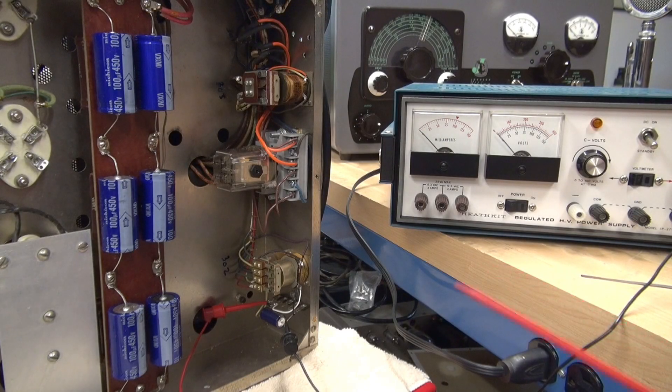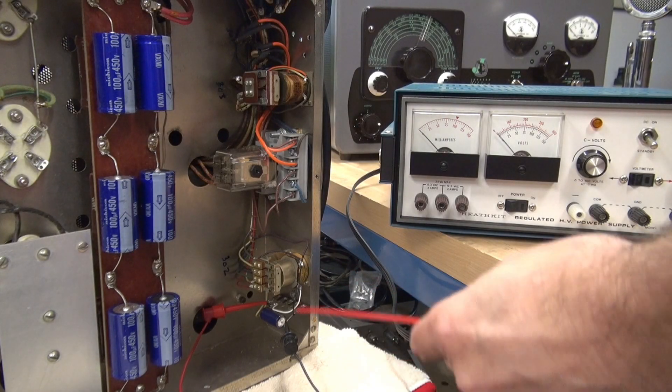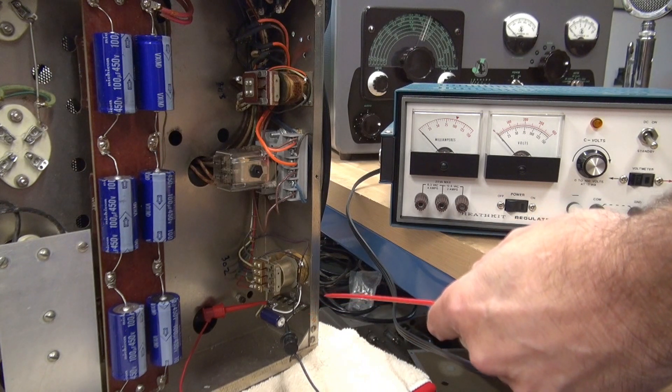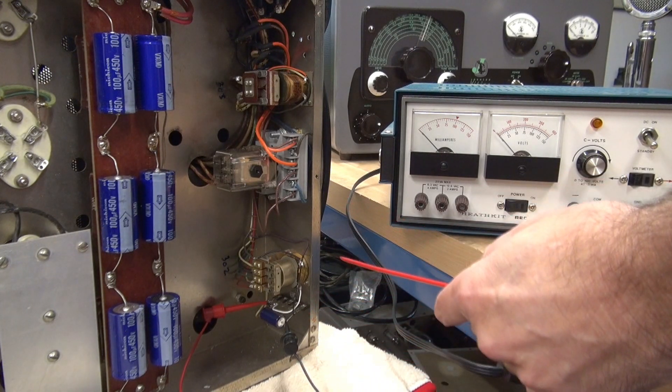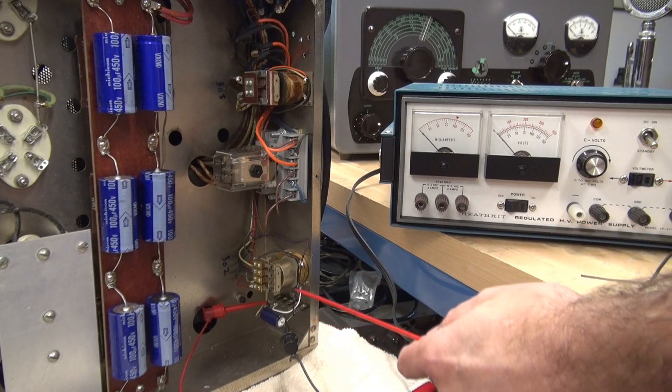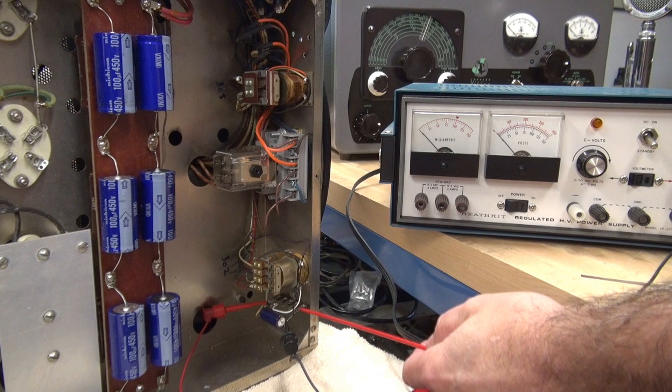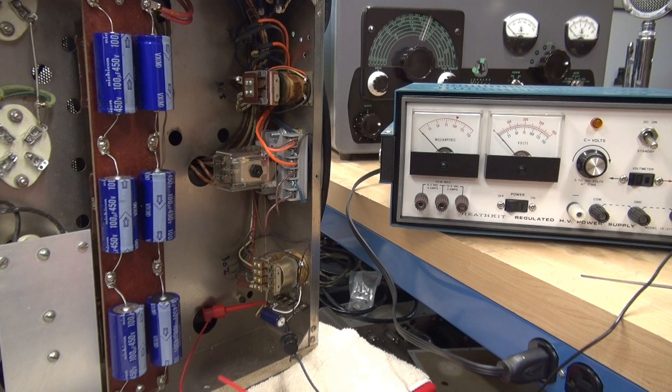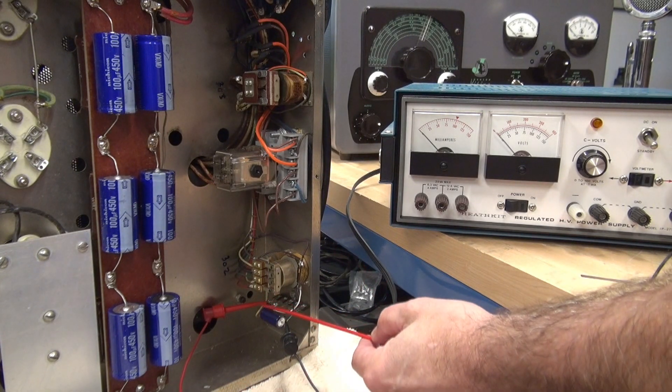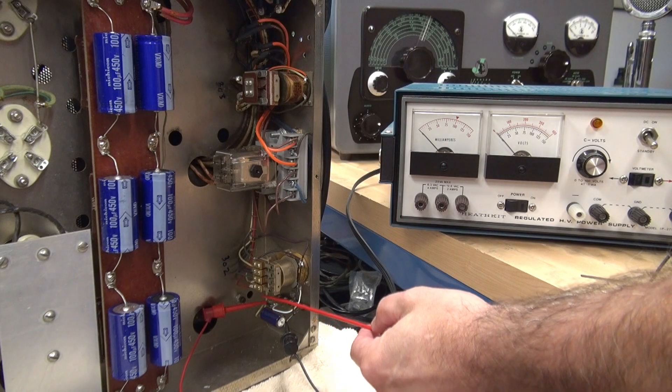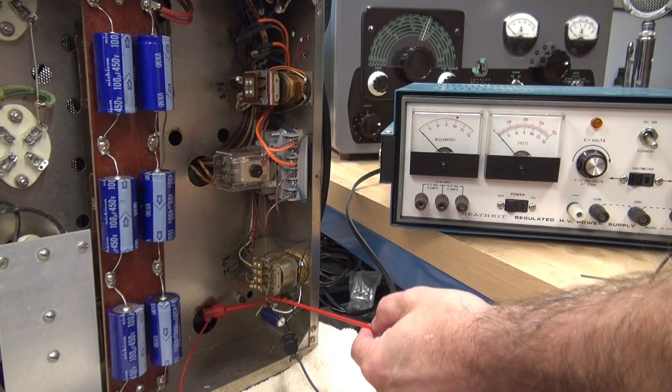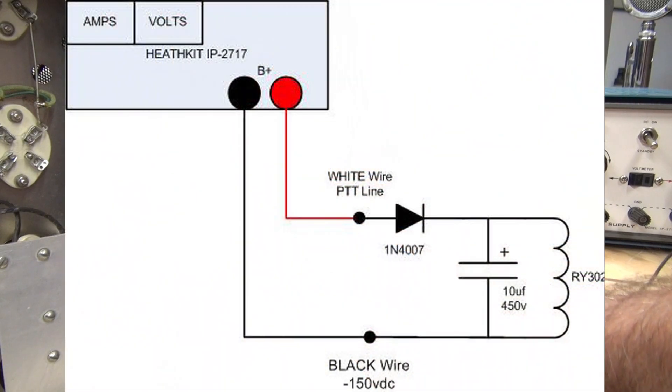Now here we go. Step one, you're going to connect your power supply to the time delay circuit, which is in parallel with the coil of RY302. Your negative lead is going to go to the negative side of the filter cap. Your positive lead is going to go up here to the white wire, which is connected to the cathode of the 1N4007 diode.